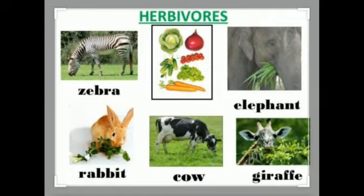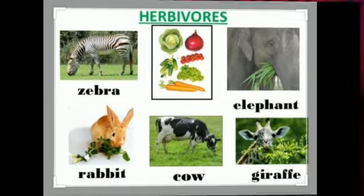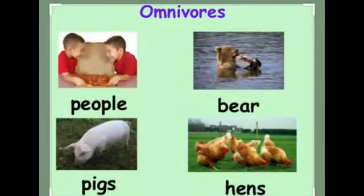Now, what are omnivores? Those animals which eat both plants as well as flesh are called omnivores, like crow and bear.